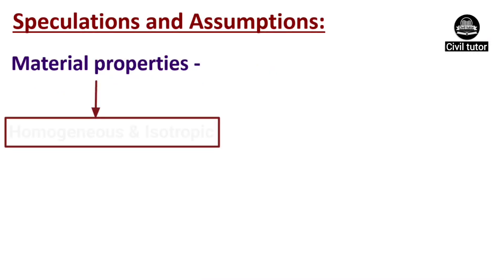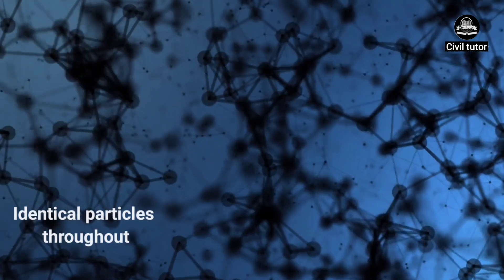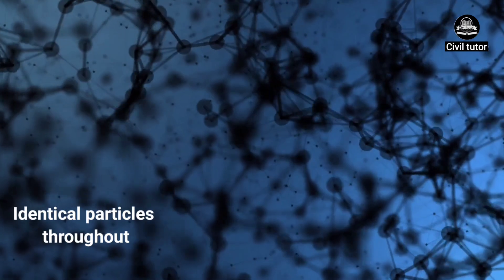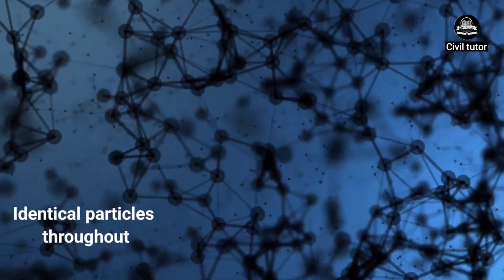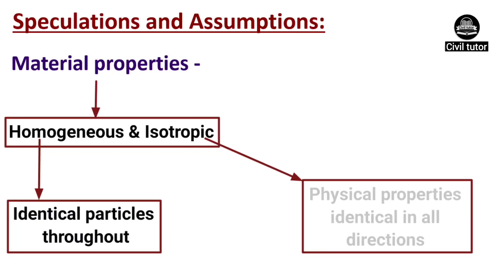The materials of the structures are assumed to be homogeneous and isotropic in nature. Homogeneous material means the identical particles that exist throughout the material, and isotropic means the physical properties of the materials which are identical in all directions.